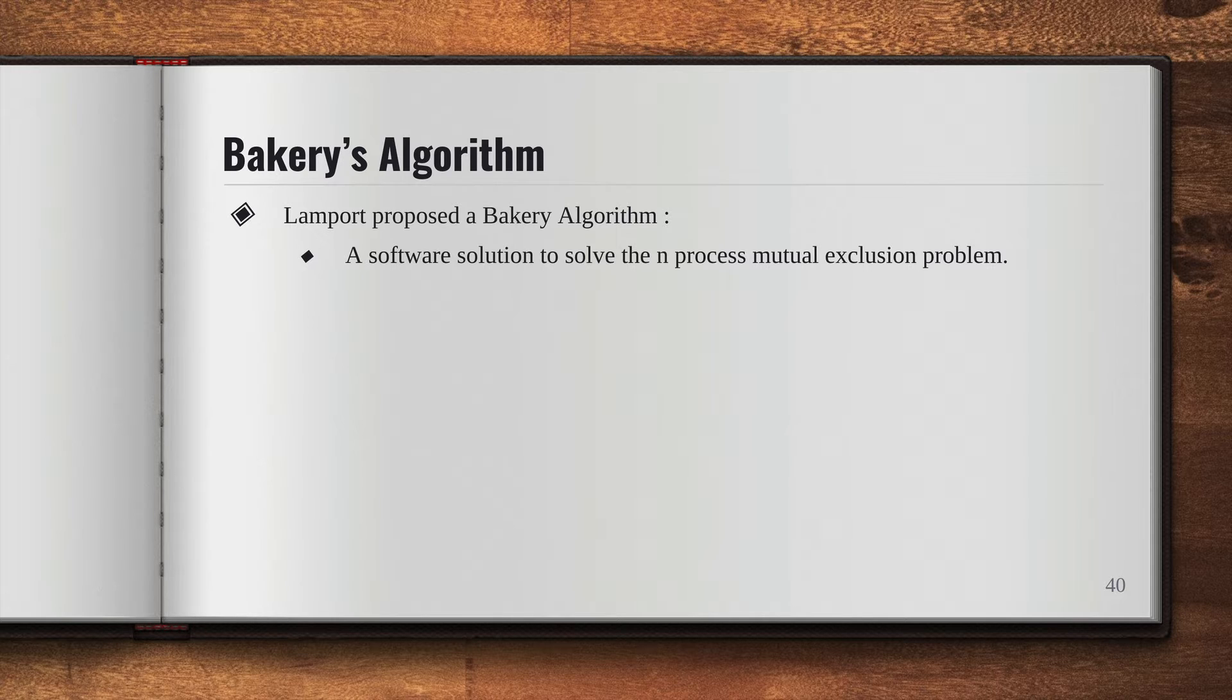Bakery's algorithm is a software solution to solve the n-process mutual exclusion problem. What is mutual exclusion? Well, mutual exclusion means only one resource should be allotted to one process at a time. So no two processes can have the same resource.